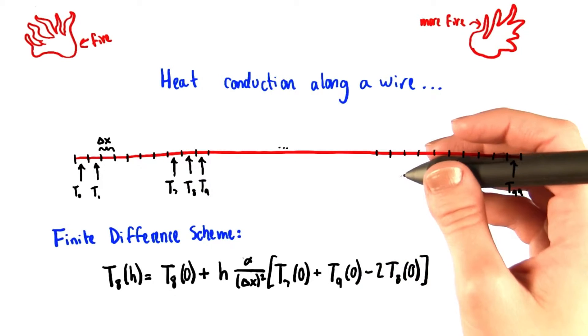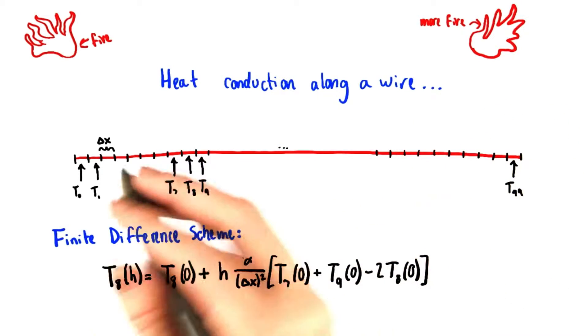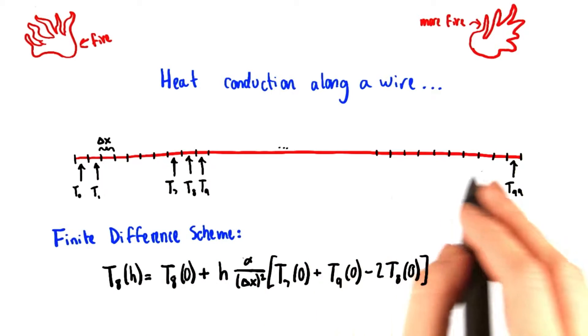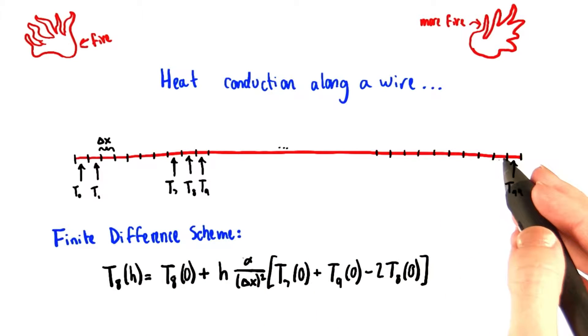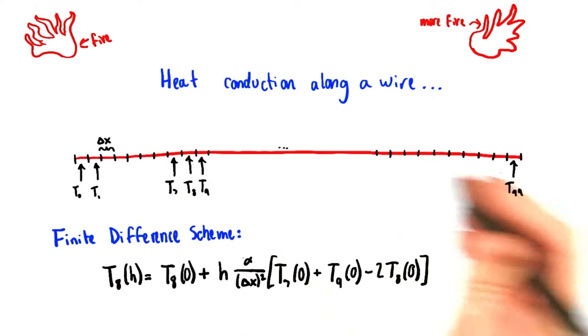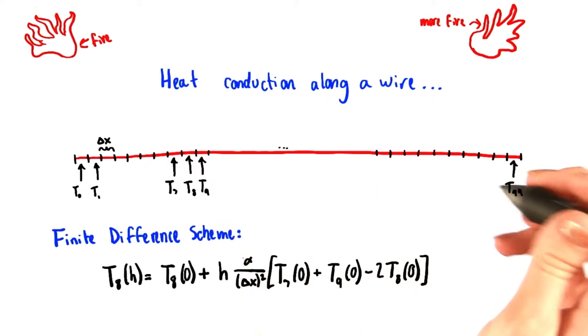In this problem, we're going to deal with heat conduction along a wire. Just like you saw in the unit, we're going to split the wire into discrete chunks. In fact, we're going to split it into 100 different chunks, numbered from 0 to 99.